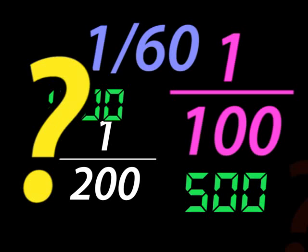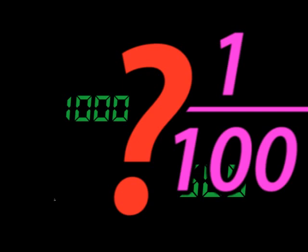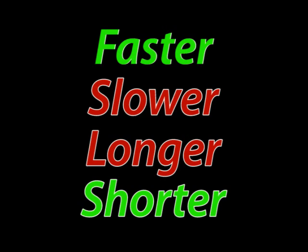You have to understand this relationship. So I've designed this little quiz so we can see how fractions and shutter speeds work together. Keep in mind these key words: faster, slower, longer, shorter.